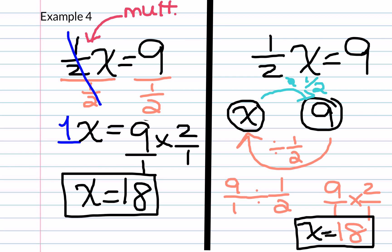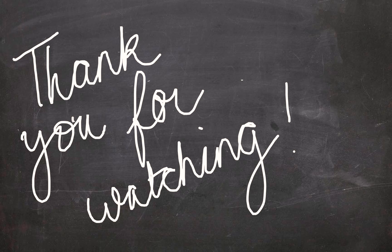Don't forget that our final step is to check our work. We take our x, erase it, and substitute in 18 to see if this works. We know 18 times 1 half is the same as 18 divided by 2, which is 9. And 9 divided by 1 half is the same as 9 times 2, which gives us 18. And then we are done. If you did not have time to fill out your worksheet while watching, please feel free to watch again. Thanks for watching!